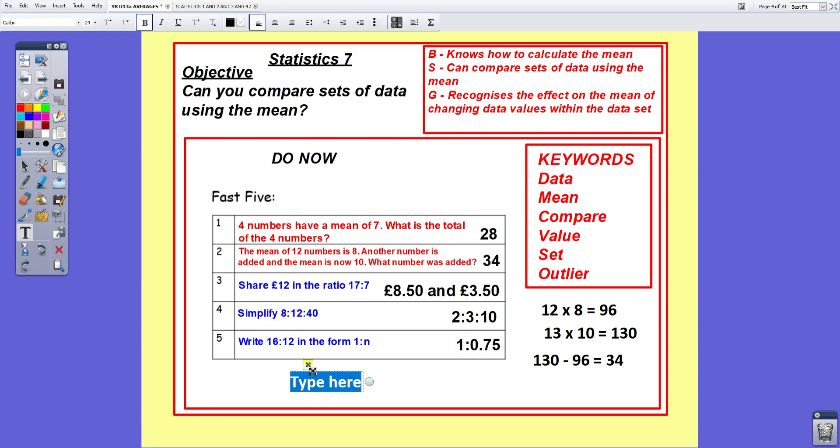And question five, write 16 to 12 in the form 1 to n. The best bet with a question like this, if you can simplify it first, please do. And that will give you 4 to 3. Each number divides by 4. And then to write it in the form 1 to n, you have to divide both numbers by 4. 4 divided by 4 gives you the 1. 3 divided by 4, 3 quarters is 0.75. So 1 to 0.75.